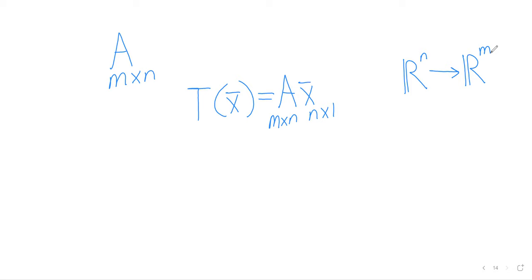If we have a matrix A, and this is an m by n matrix, we can use this matrix to define a transformation T(x) = Ax that takes the vector and multiplies it by the matrix. This is a transformation from R^n to R^m, and we'll see that transformations like this are very powerful tools.